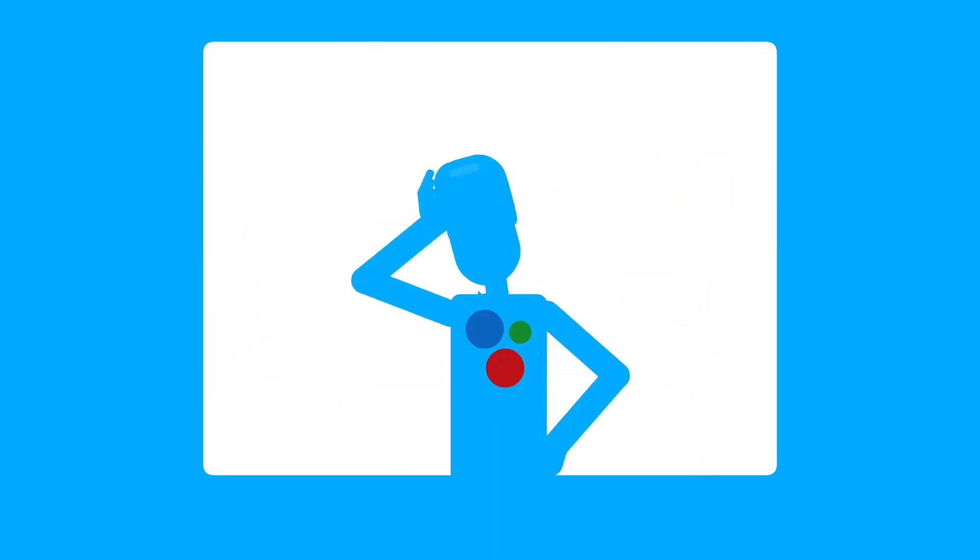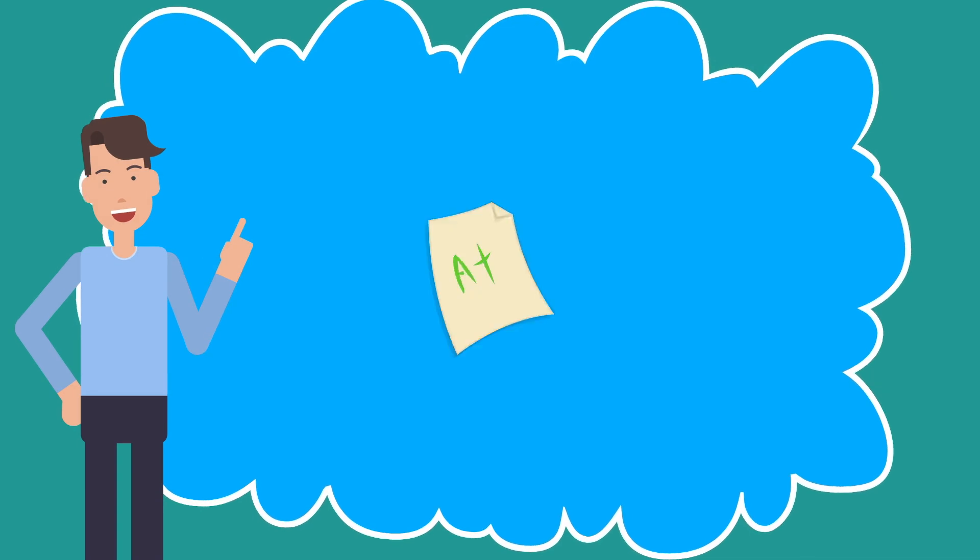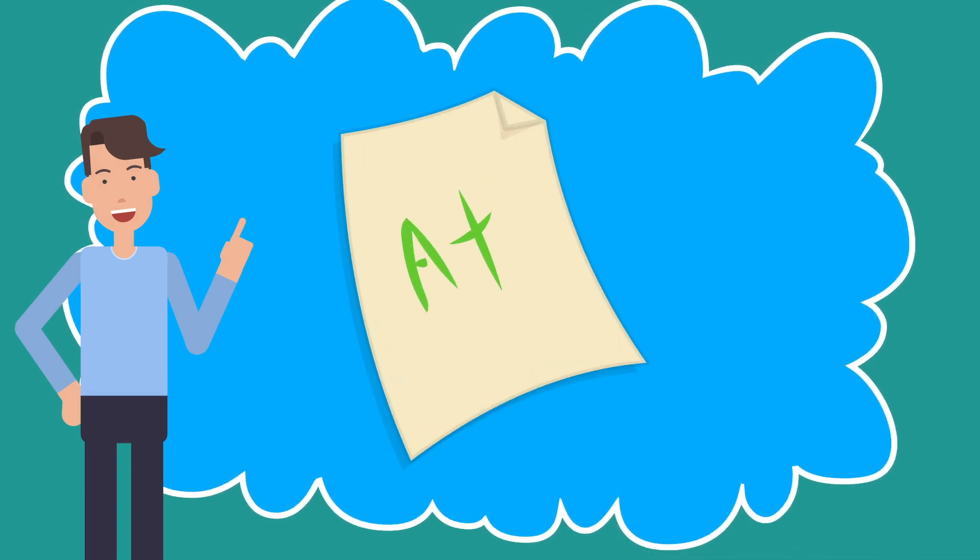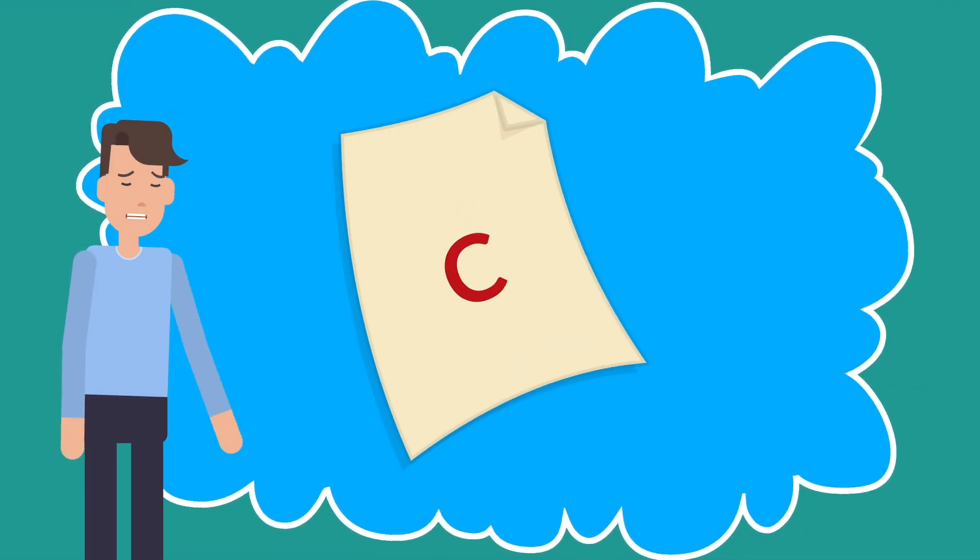Often though, due to the pressures of life, we focus too much on the red and blue circles. For example, we really want to get an A on an assignment but we fall short and get a C.